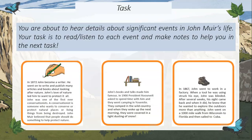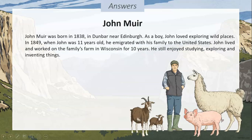That was an introduction to John Muir as a person. For your next task, you're about to hear details about significant events in John Muir's life. Your task is to read or listen to each event and make notes to help you in your next task. John Muir was born in 1838 in Dunbar, near Edinburgh. As a boy, John loved exploring wild places. In 1849, when John was 11 years old, he emigrated with his family to the United States. John lived and worked on his family's farm in Wisconsin for 10 years, and he still enjoyed studying, exploring, and inventing things.